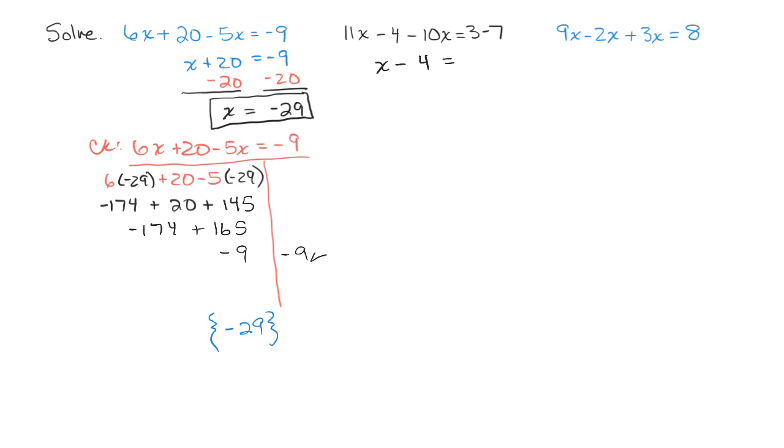And 3 minus 7, same as 3 plus negative 7, is negative 4. Now that each side is simplified, I want to isolate the x on the left-hand side. So let's add 4 to both sides. And that will give me x plus 0, which is x. And negative 4 plus 4 is 0.